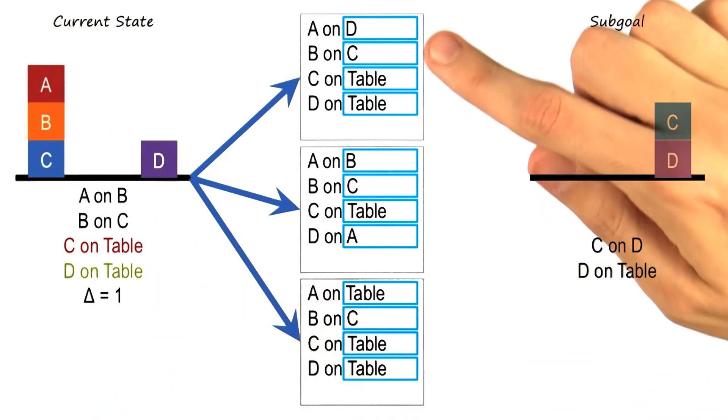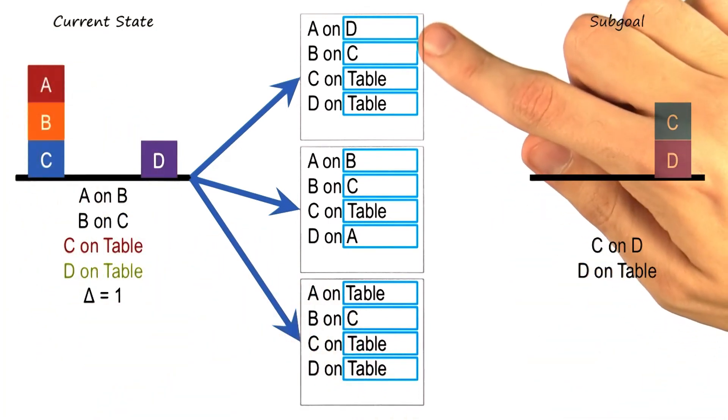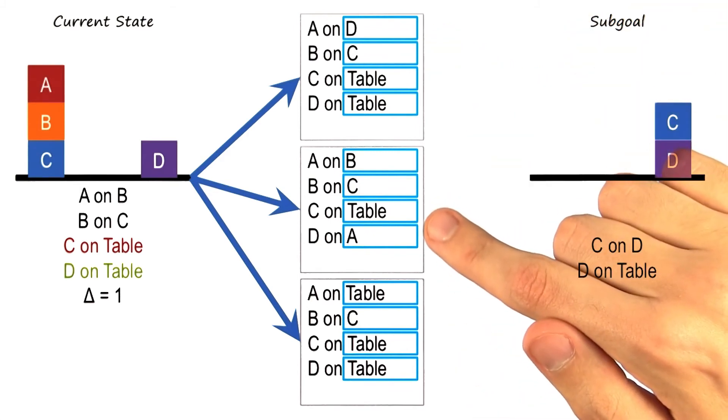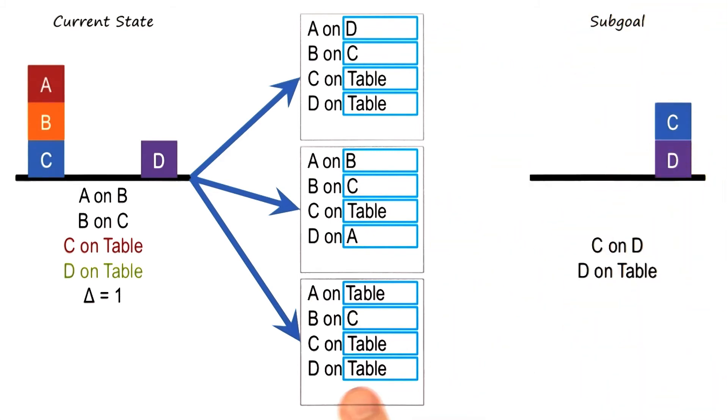Up top I have A on D — moving A to D. In the middle I have moving D up to A. And on the bottom I have A on the table. That looks right, David.